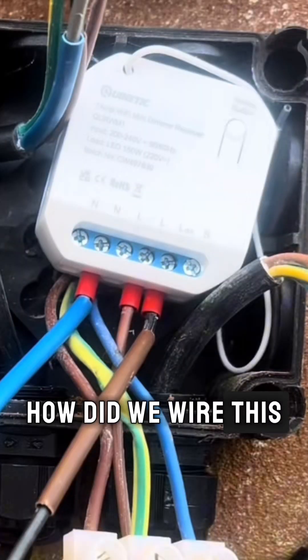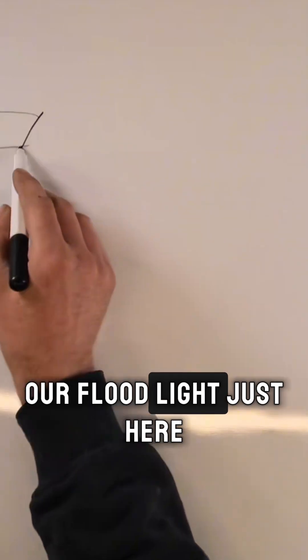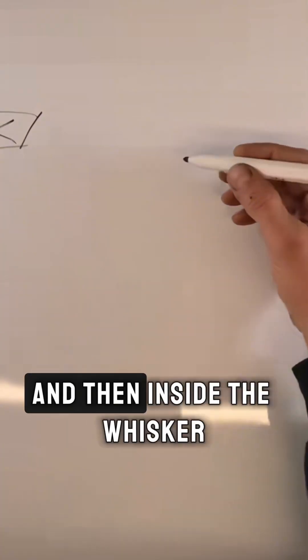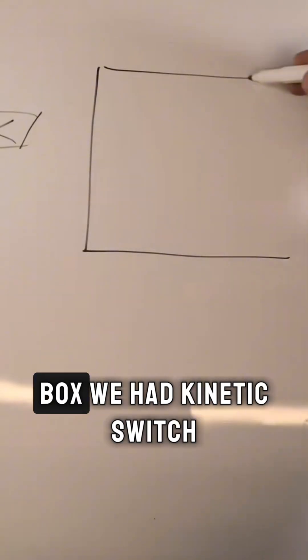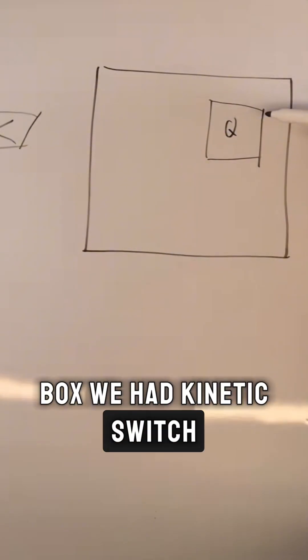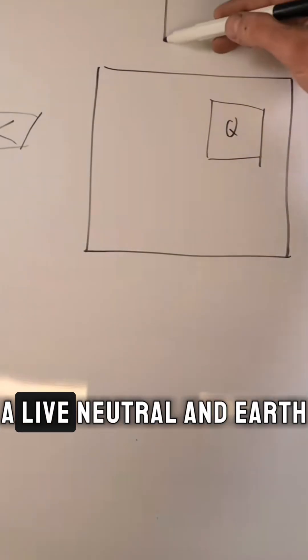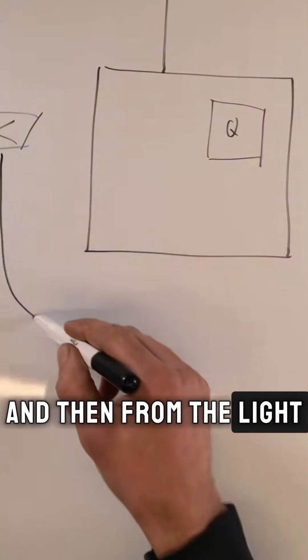So how did we wire this? Well firstly we had our floodlight just here, and then inside the whisker box we had a Quinetic switch, a live, neutral and earth.